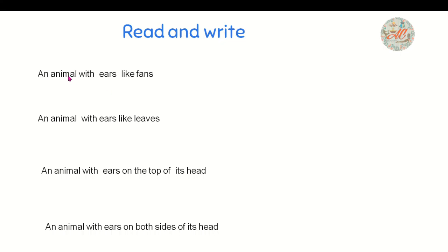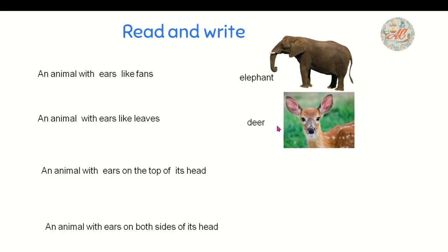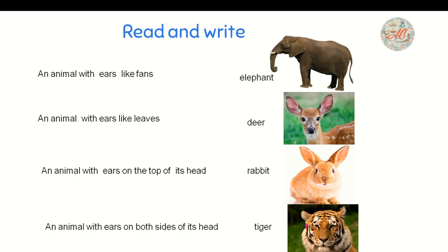Read and write. An animal with ears like fans — this is elephant; elephants have ears like fans. An animal with ears like lips — deer has ears like lips. An animal with ears on the top of its head — this is rabbit; rabbit has ears on the top of its head. An animal with ears on both sides of its head — it's tiger; tiger has ears on both sides of its head.